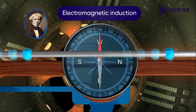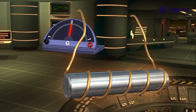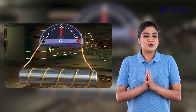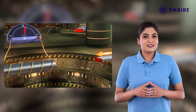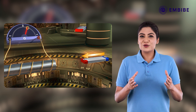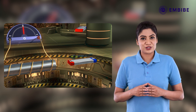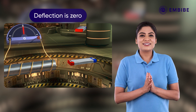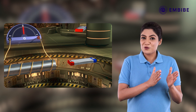Electromagnetic induction is defined as the phenomenon of inducing EMF by changing the magnetic field in a coil. Take a coil of wire and connect a galvanometer with this wire. Now bring a magnet near the coil. You can see that the galvanometer shows deflection. When the magnet is made stationary, the galvanometer shows no deflection.